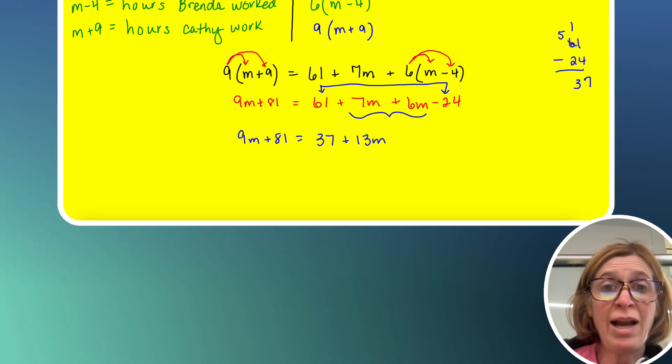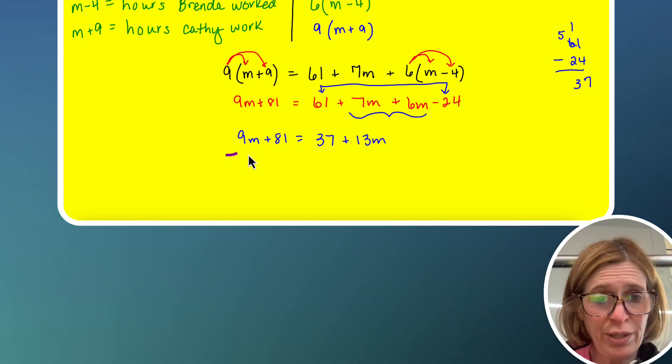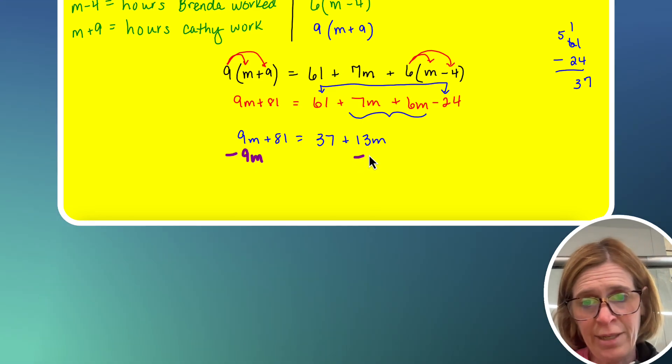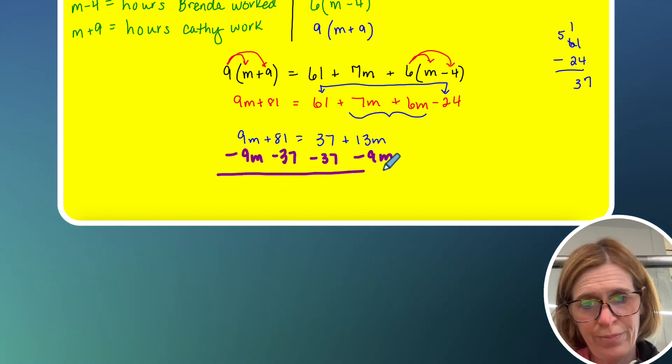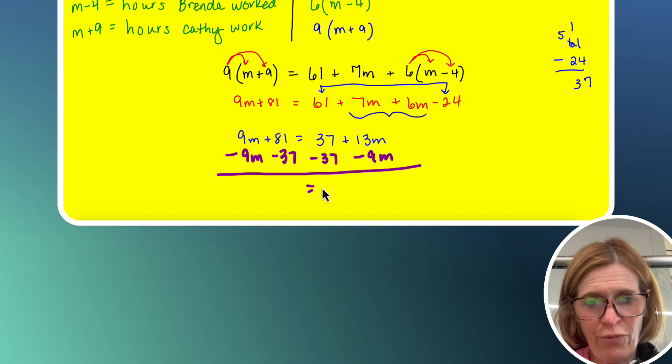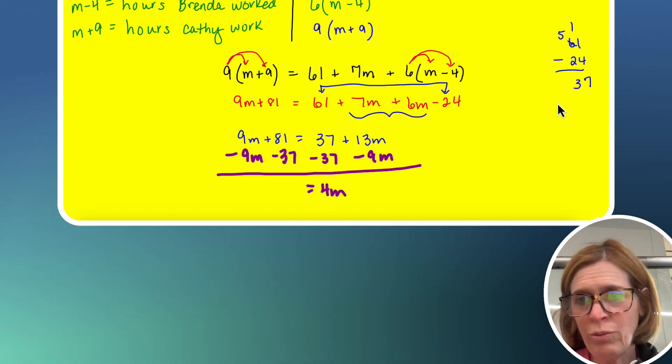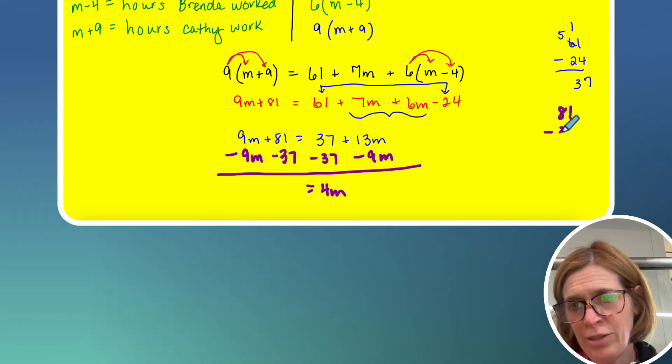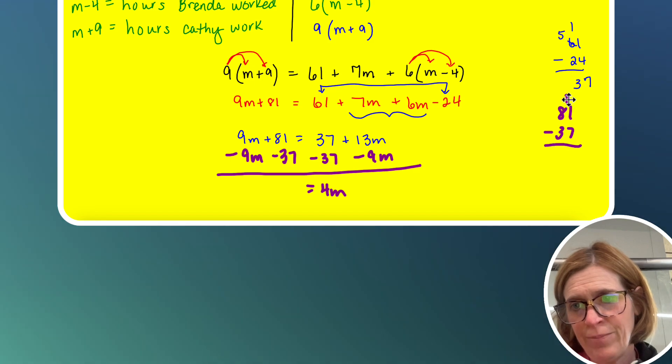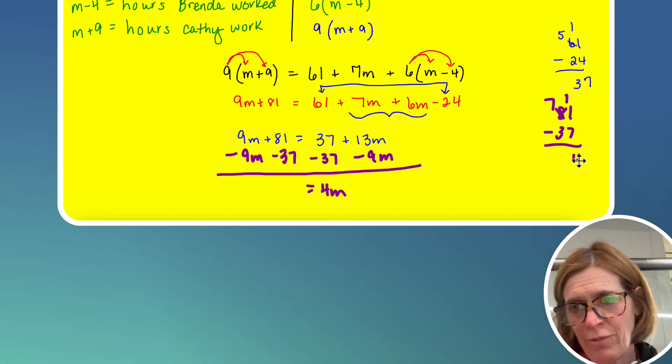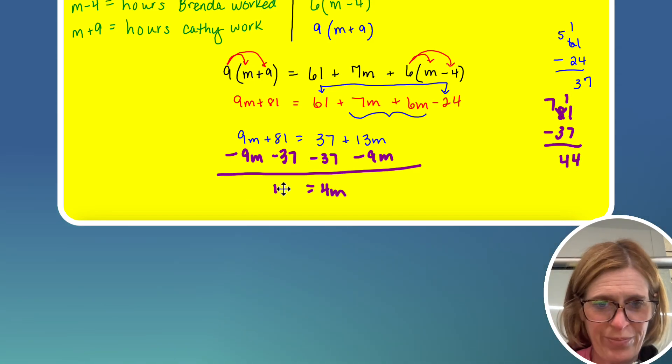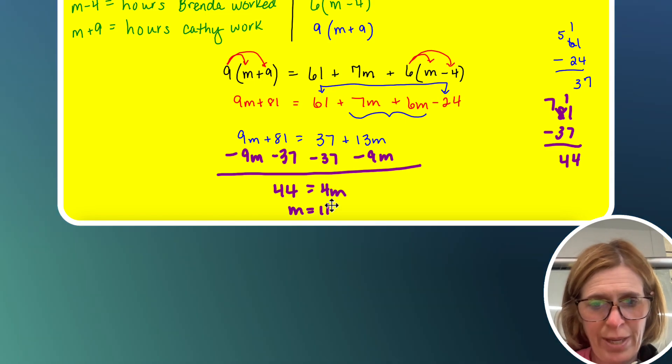Alright, so now I'm going to isolate my variable, so I'm actually going to bring the 9M to the 13, and bring the 37 to the 81. Alright, so we're going to get 4M equals, so I've got to do 81 minus 37, so that's 44. So M is 11.